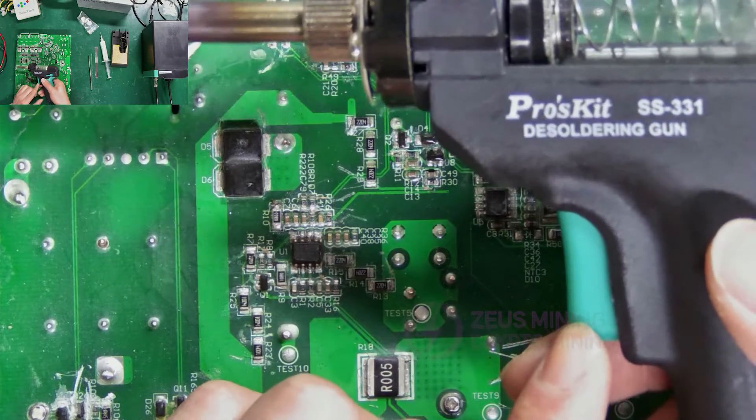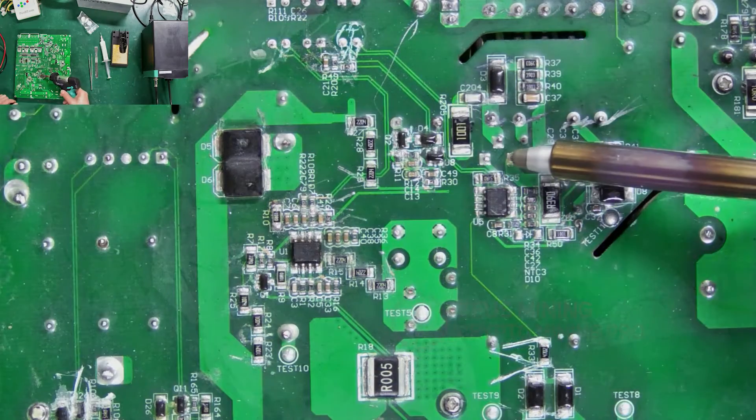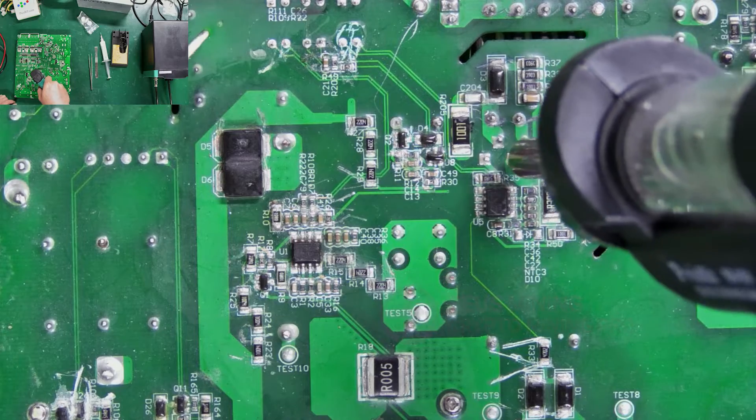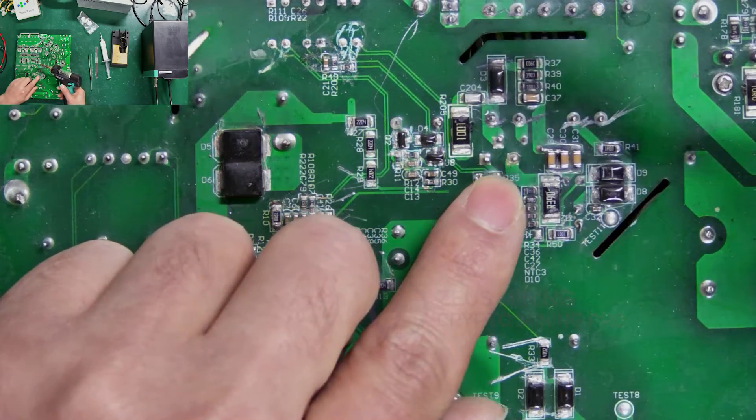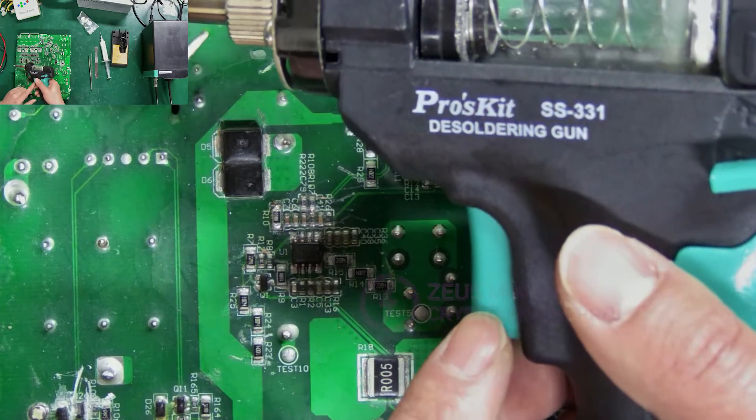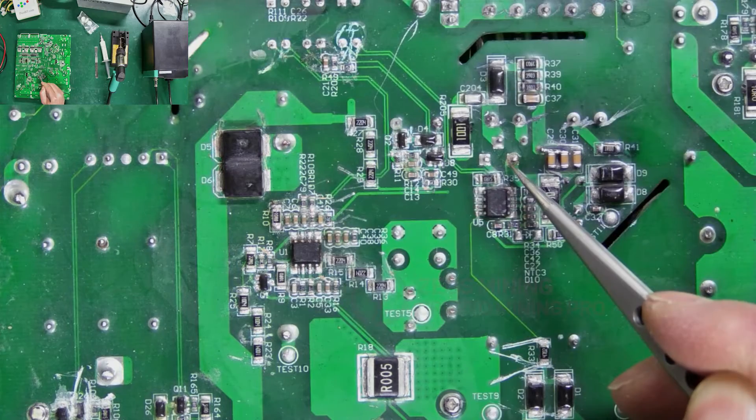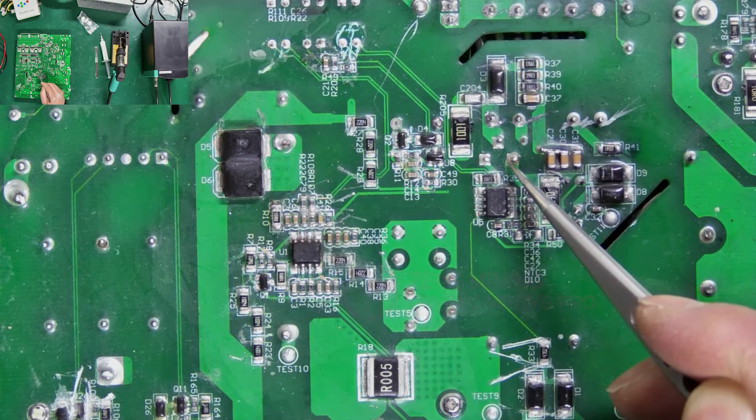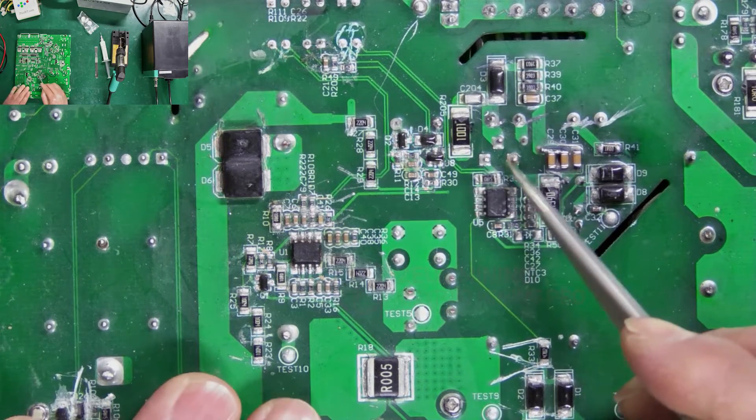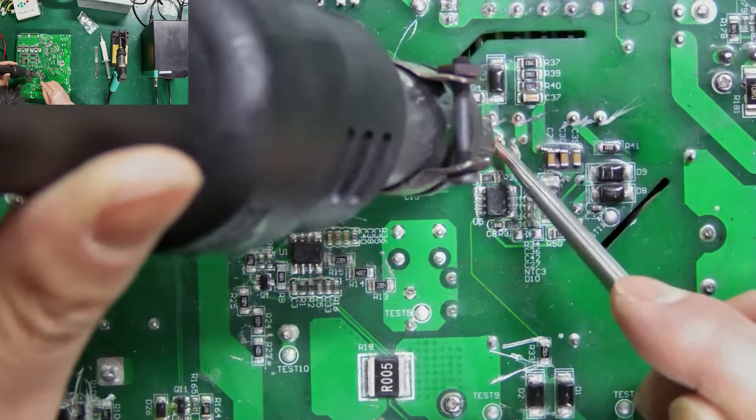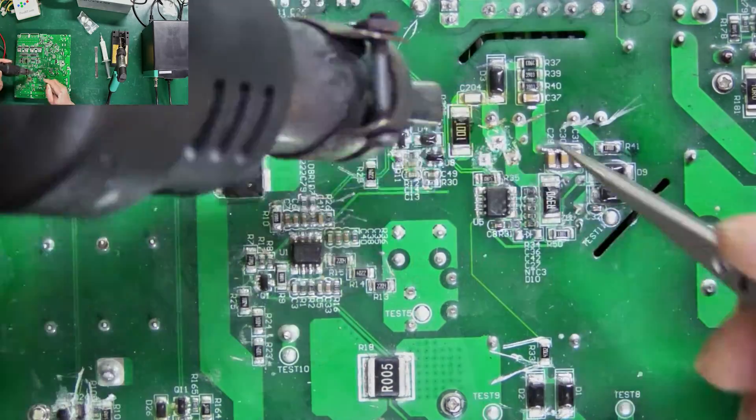This is the desoldering gun switch. Aim the nozzle at the pin of the component we want to remove, and after the solder melts, press this switch to clear the solder. For different pins, we need to use nozzles of different diameters. If the pins are covered with insulating glue, it also needs to be removed.